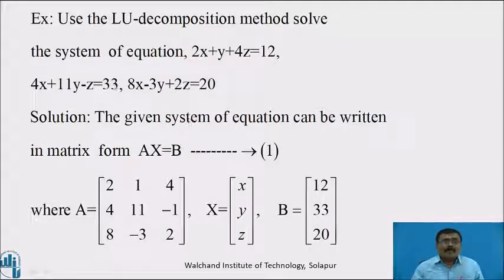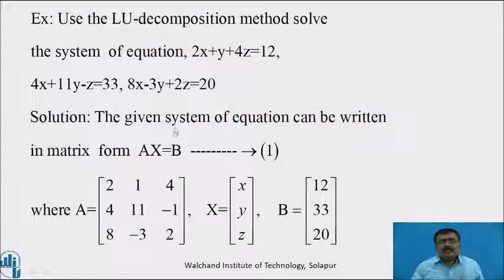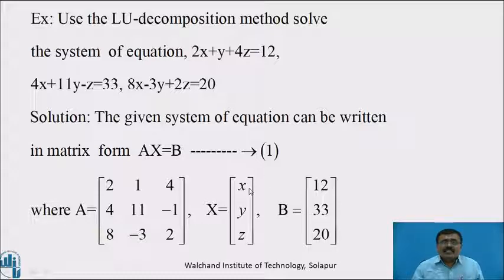Now the main example: use the LU decomposition method to solve the system of equations: 2X + Y + 4Z = 12, 4X + 11Y − Z = 33, 8X − 3Y + 2Z = 20. The given system can be written in matrix form as AX = B, where A = [[2, 1, 4], [4, 11, −1], [8, −3, 2]], X = [X, Y, Z], and B = [12, 33, 20].